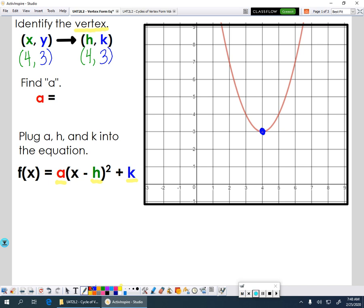Now the a value is kind of like the slope of your parabola. But when you have a parabola, obviously you don't have a consistent slope because it's curved. We want to always have a run of 1.